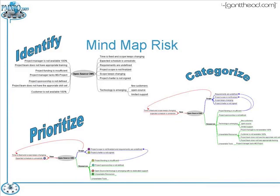Another area is how you can use mind maps to help mind map risk. When you look at risk management processes, you go through risk identification, risk categorization, and risk prioritization. Here is an example using a tool called FreeMind, which is an open-source mind management application, where you can identify all the different risks associated with a particular project within a facilitated brainstorming session.